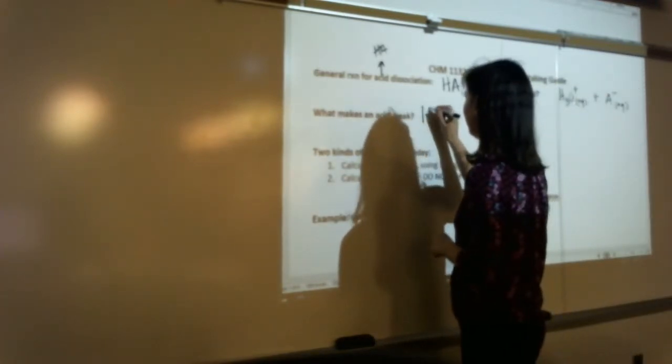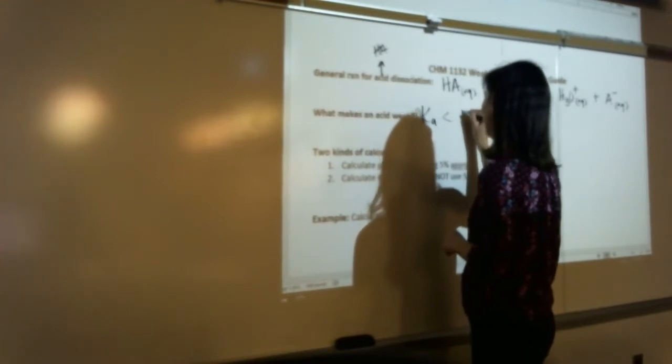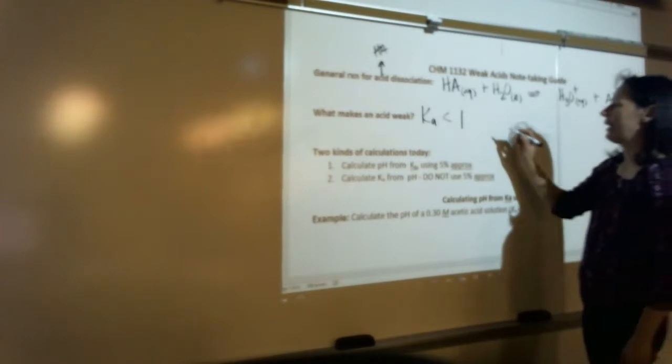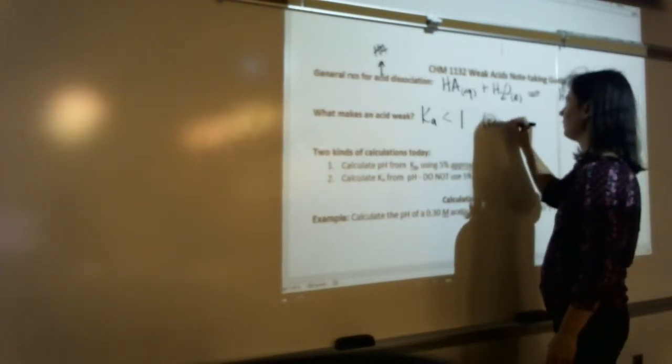For a weak acid, Ka is significantly less than one. It's usually much, much, much less than one, right? So Ka is less than one. That means it's reactant favored.